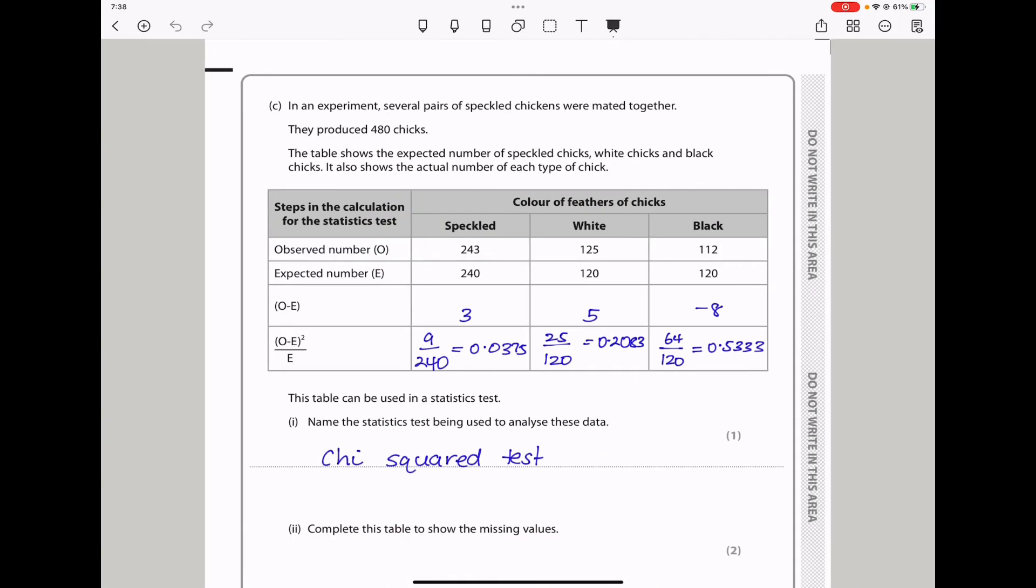In an experiment, several pairs of speckled chickens were mated together. They produced 480 chicks. The table shows the expected number of speckled chicks, white chicks, and black chicks. It also shows the actual number of each type of chicks. They wanted us to find observed minus expected, which is that minus that giving us 3, that minus that giving us 5, and that minus that giving us negative 8. The next part was for us to get the difference between the observed minus the expected squared divided by the expected. That squared gives us 9 divided by the expected 240. We got 0.0375. Here we have the squared gives us 25 divided by that, which gave us that. The squared gives us 64 divided by that, which gave us that.